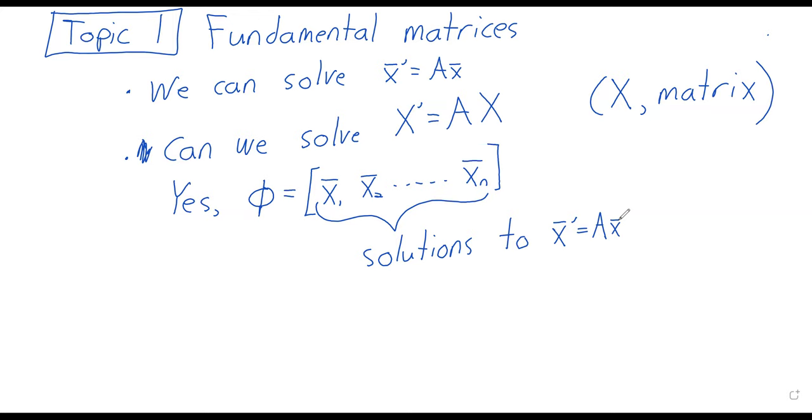The solution to this matrix equation is the matrix whose columns are the solutions to x prime equals A x, where x is now a vector. And this phi is called the fundamental matrix, which, at least for our purposes, feels like it's overselling it a little. I mean, if you compare it to something like the fundamental theorem of calculus, and after this, we won't be doing a lot with these allegedly fundamental matrices.